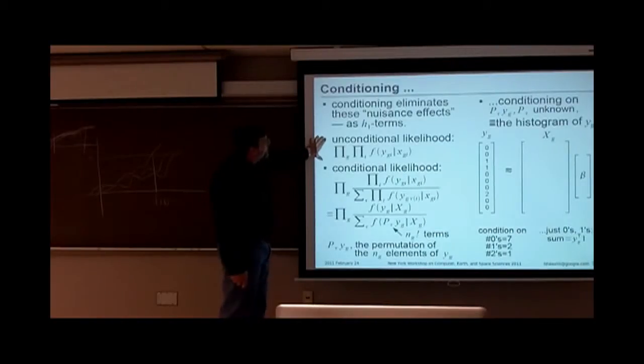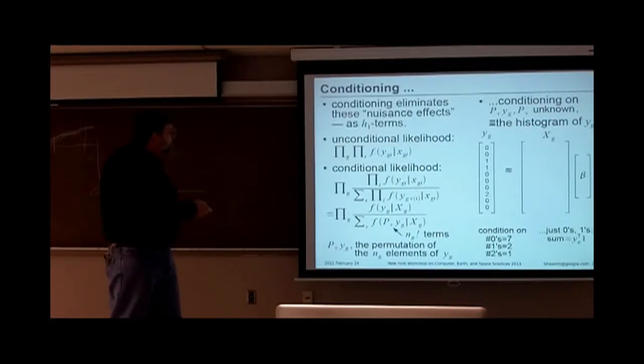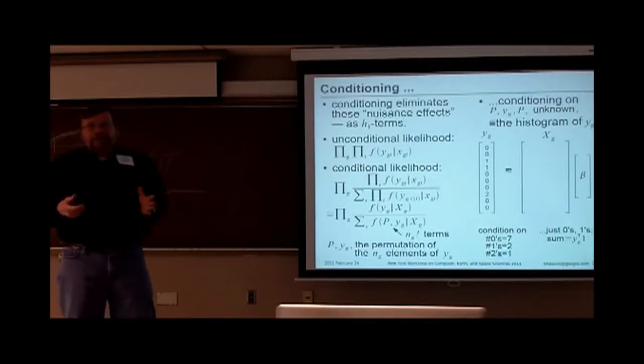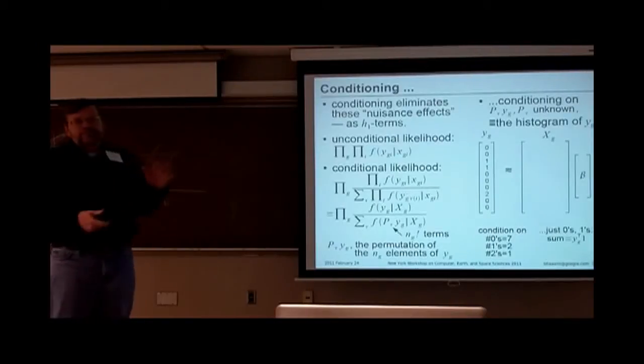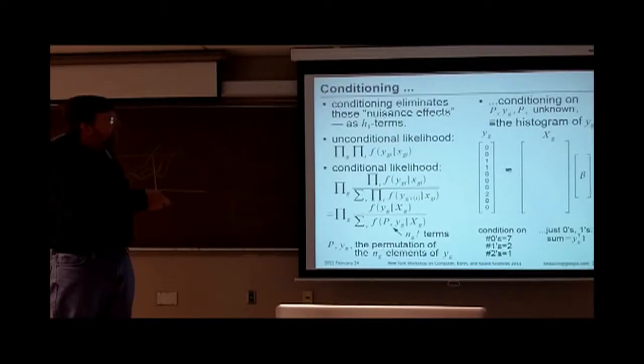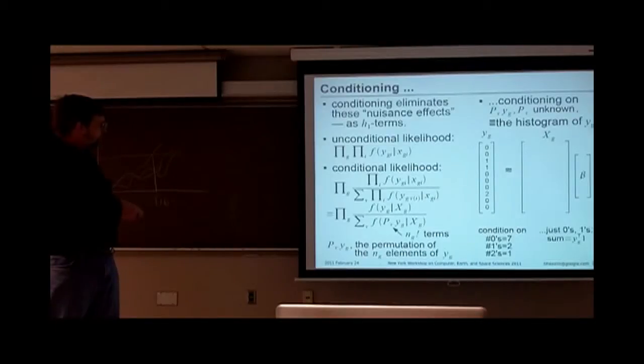So if you write down a likelihood, it's going to be this kind of expression where you're going to say, well, the groups are independent and maybe the observations within the group are independent. If you condition on that, what will you condition on? Well, in this context, conditional models mean if this is my group, what do I have? I have like seven zeros here, and I have a couple of ones, and I have a two. What I'm going to do is I'm going to condition on the histogram. So I'm going to condition on the fact that in my chunk of ten, I have seven zeros, two ones, and a two. But I don't know exactly which row gets which.